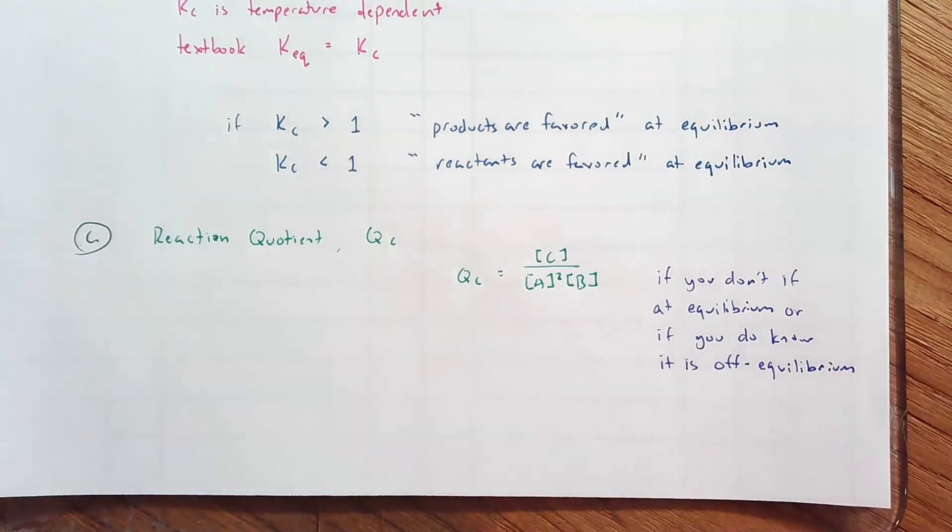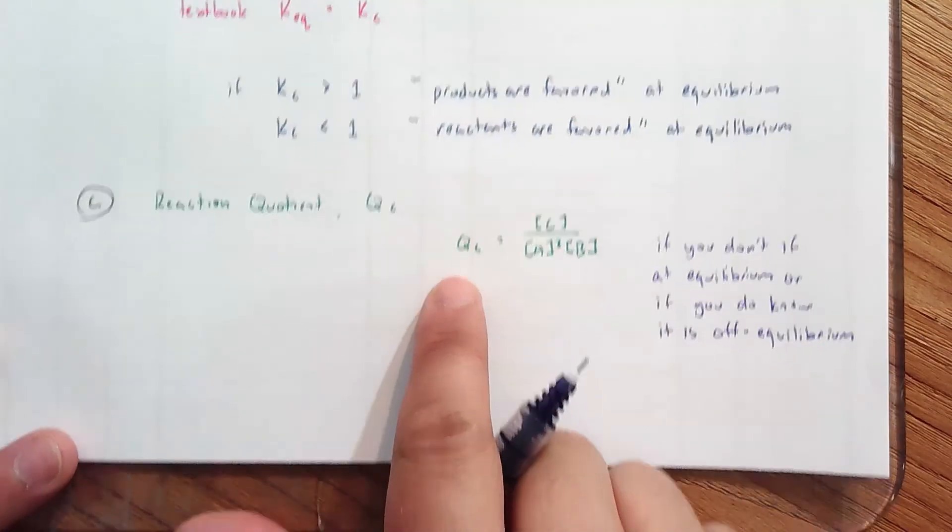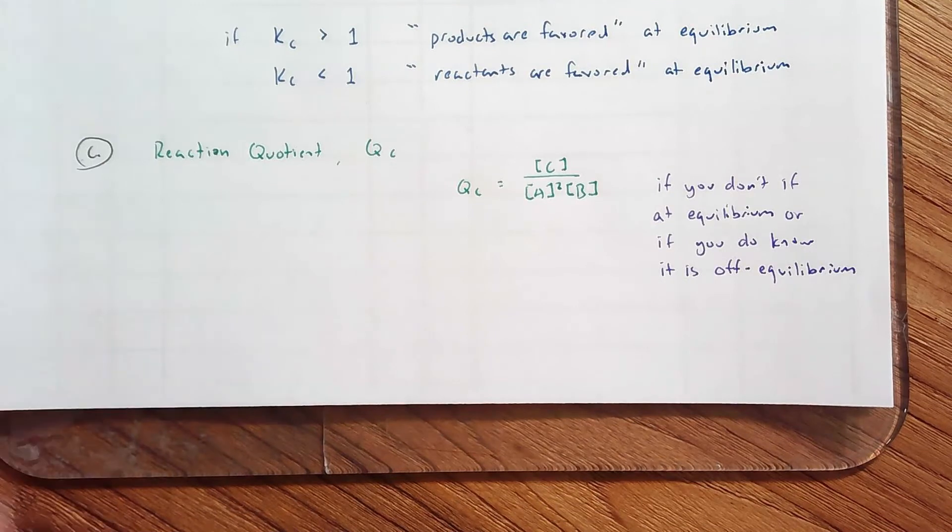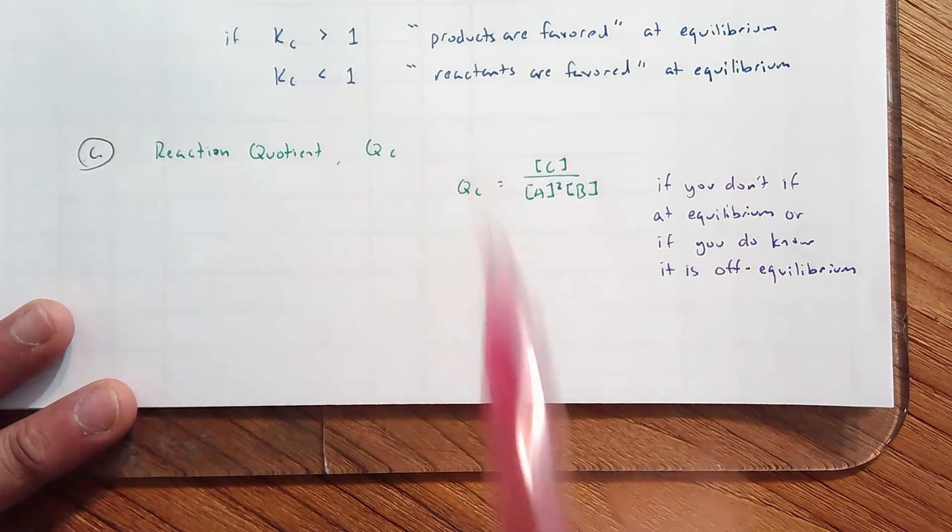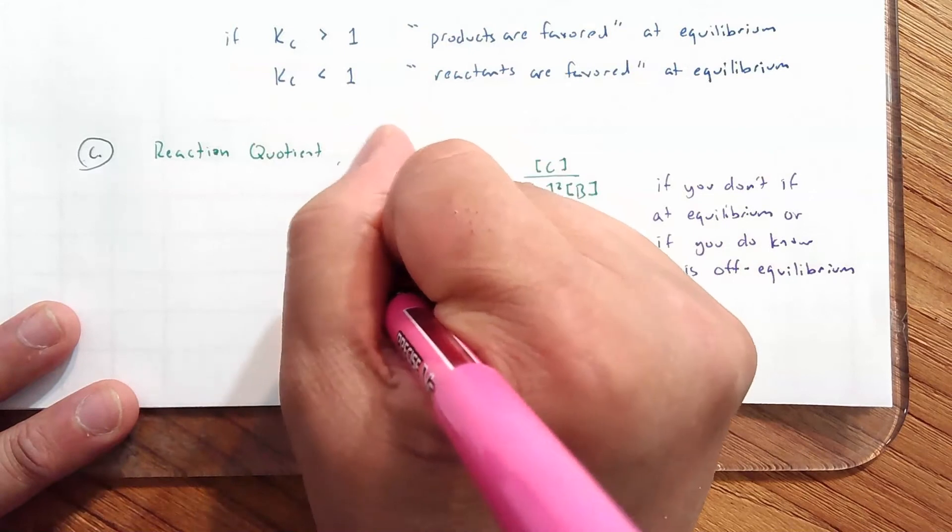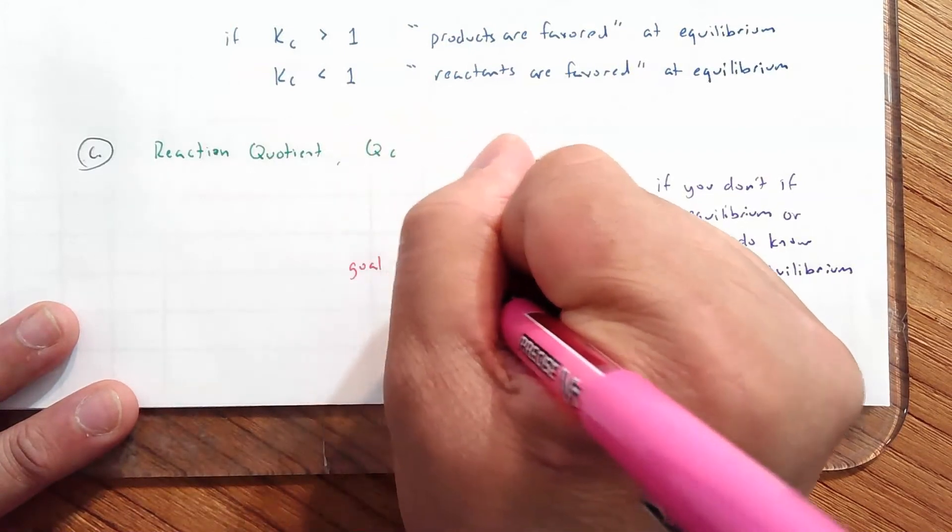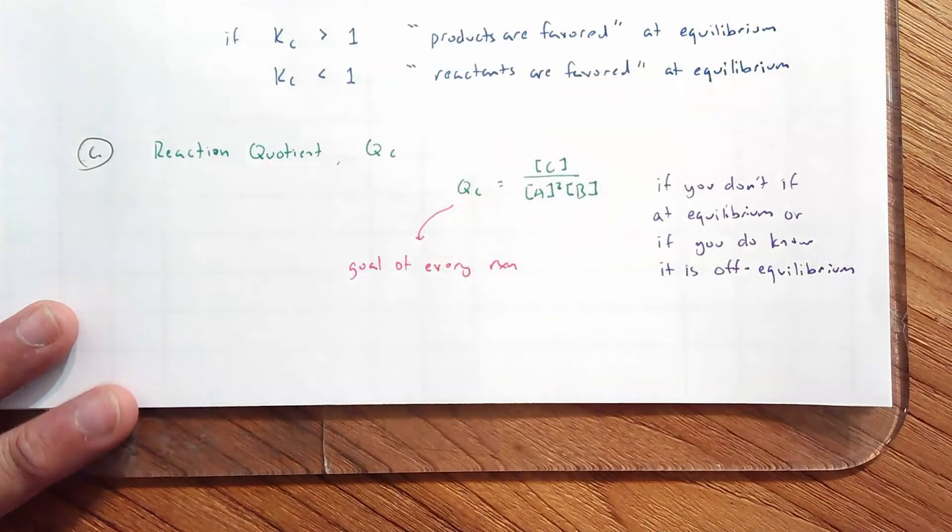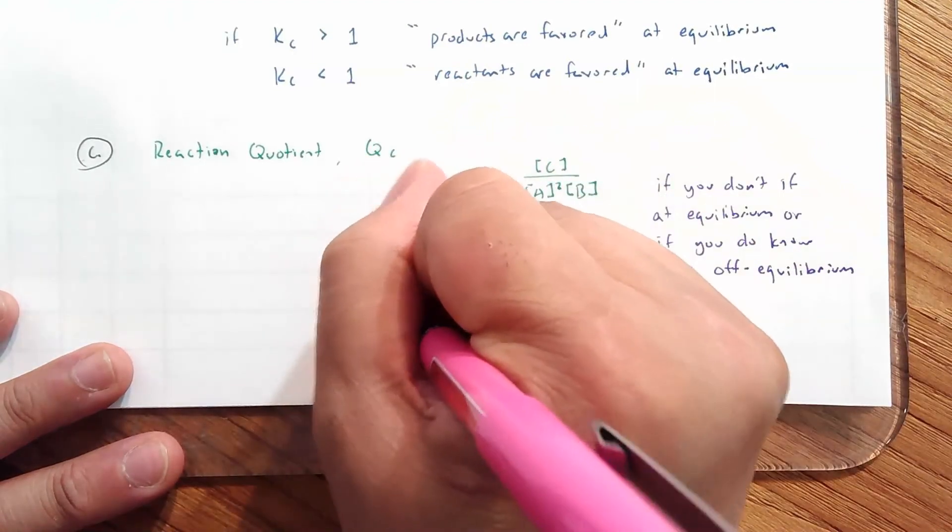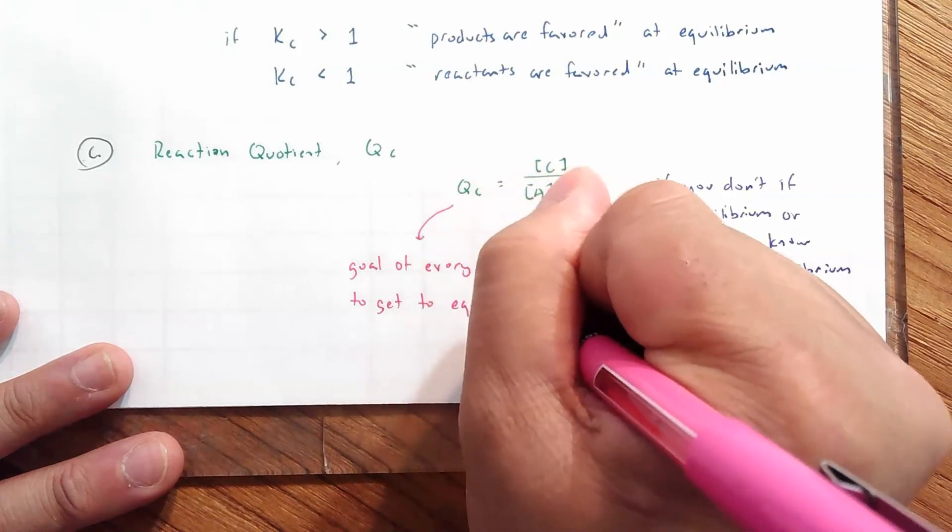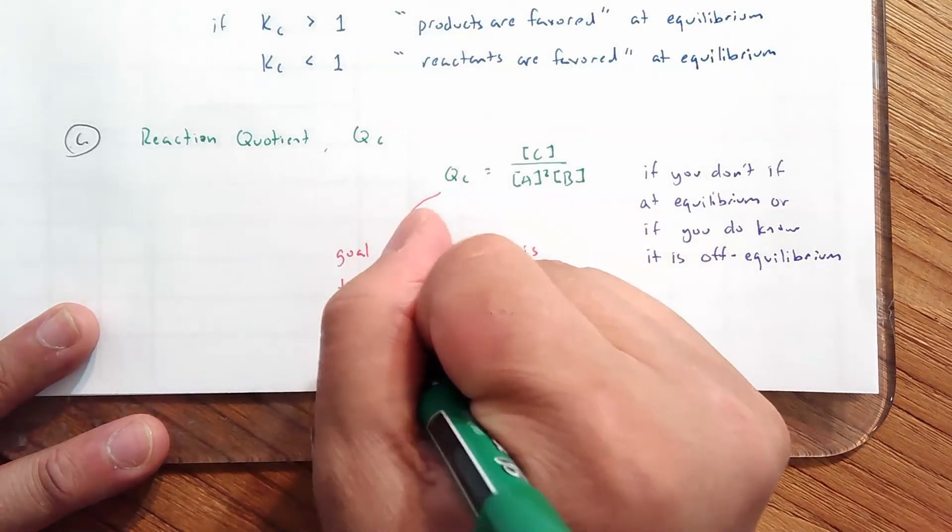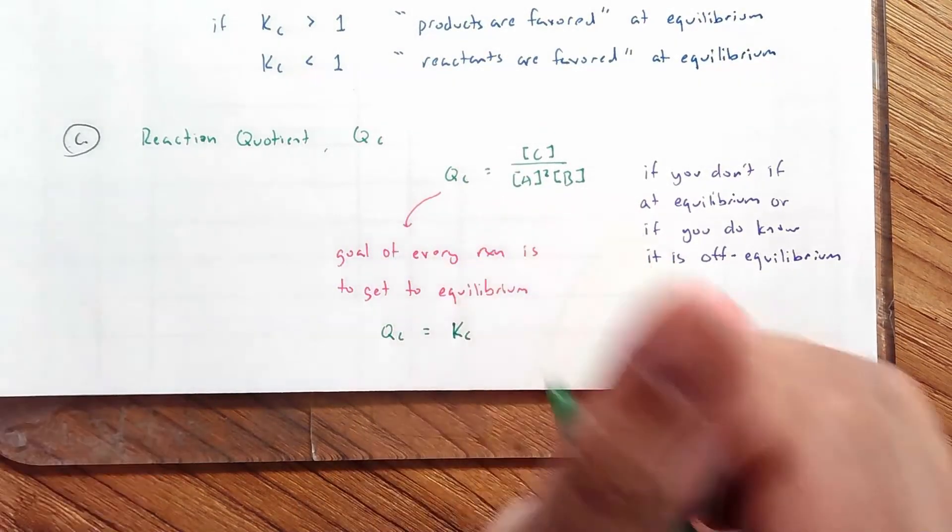If you don't know if at equilibrium or if you do know that you're off equilibrium or if you do know it is off equilibrium that the Qc calculated does not equal Kc. All right, so there's information from whether Qc is larger or less than Kc. Before we go to that, let me just say that really the goal of every reaction is to get equilibrium, just to be at equilibrium. The goal of every reaction, or the driving force for every reaction is to get to equilibrium. And in that case, yes, in those conditions, at equilibrium, Qc is equal to Kc.